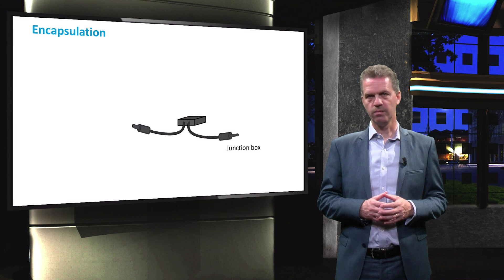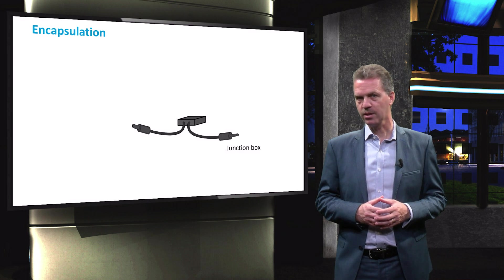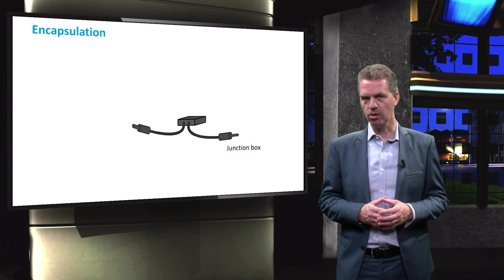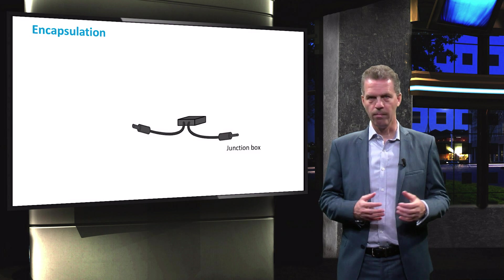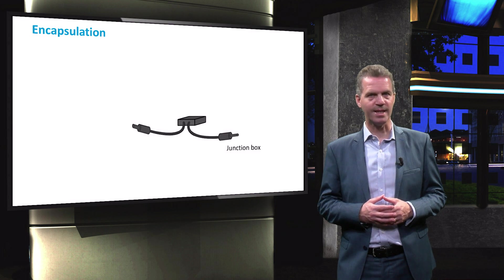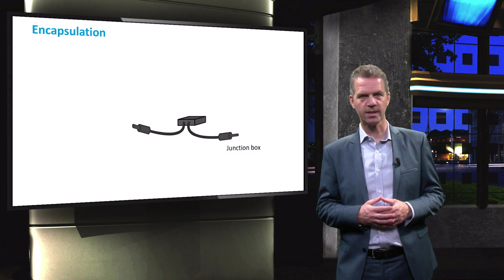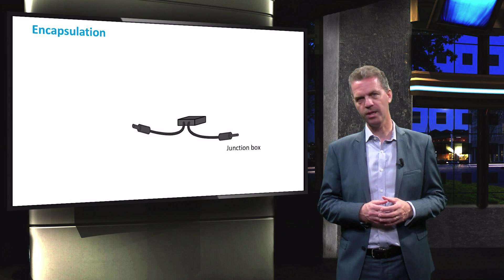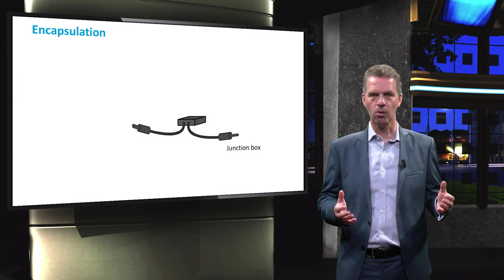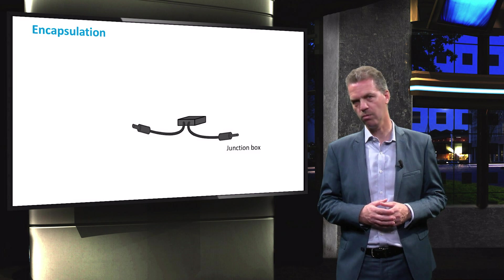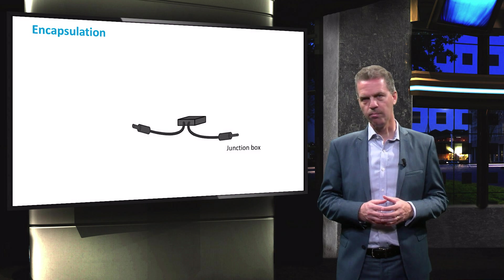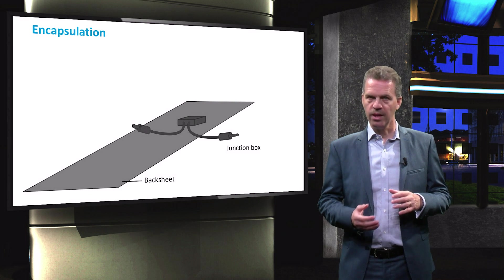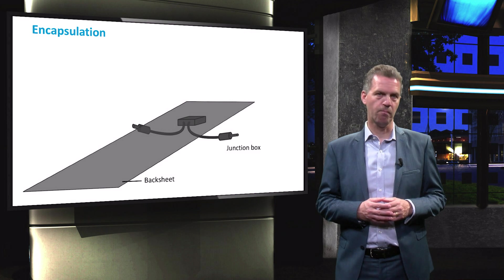Before we conclude this video, we will show the basic structure of a crystalline silicon solar module. On the back side of the module, a junction box is placed that encloses the string interconnects and brings out a positive and negative terminal cable that can be connected to an inverter or to other solar modules to form an array. The junction box is located underneath a plastic or glass backsheet.